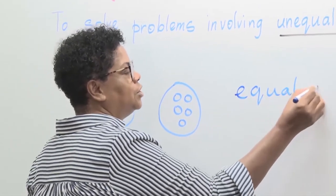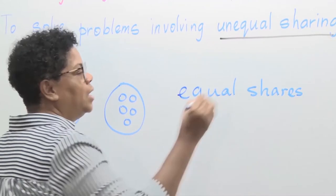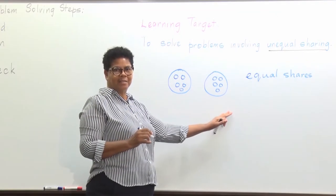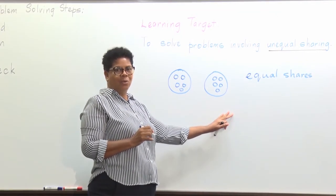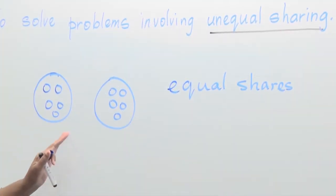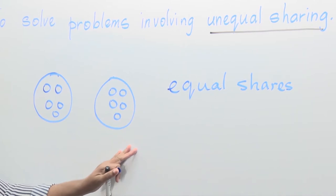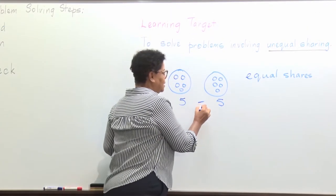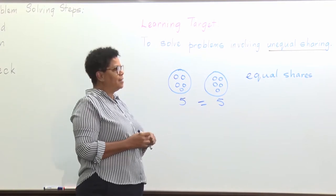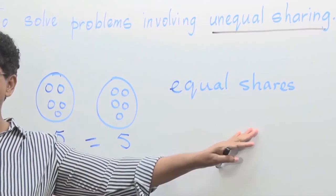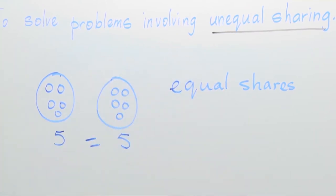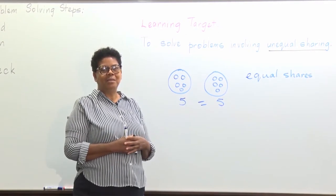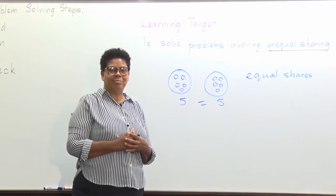So if she puts five in one group and five in the other group, she would have equal shares. Equal shares mean both groups or both shares have the same number. This group and this group have 5 in each, so 5 is equal to 5. So then, if equal shares means the same number or the same amount, then unequal shares would mean not the same amount, not the same number, or not equal.